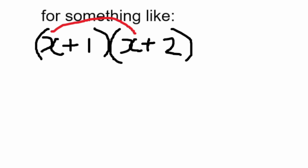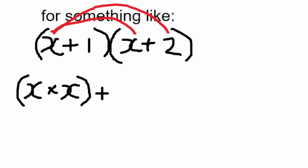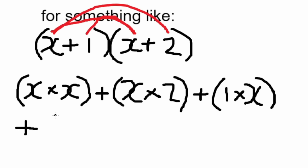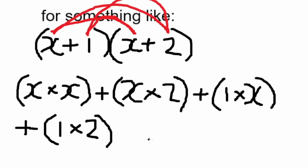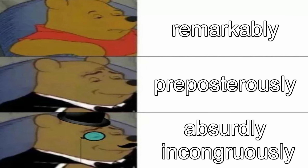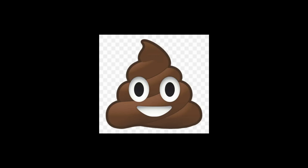you multiply the first by the other first: x times x. Then add that to the first times by the outer: x times 2. Then add that by the inner times by the other first: 1 times x. And finally add that to the outer times by the other outer: 1 times 2. And you get something like this. Now this, remarkably, preposterously, absurdly, incongruously is crap — it's crap because it ain't simple.